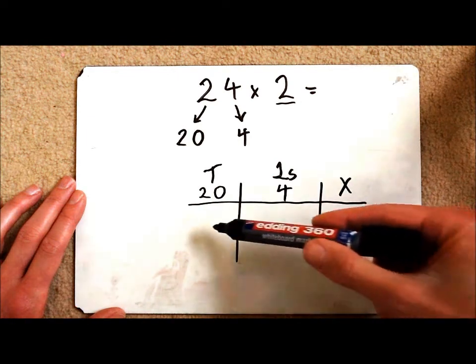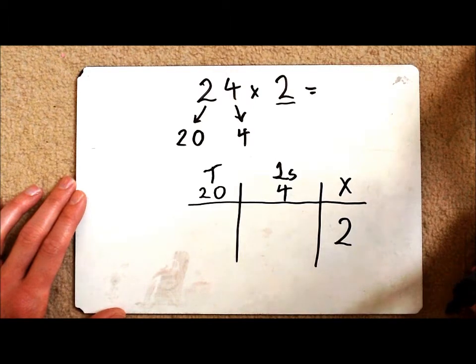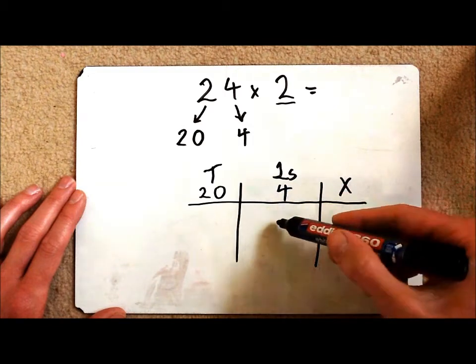And then you can see I've got 2 spaces here where my answer to my multiplication is going to go. So let's do my ones first of all. 2 multiplied by 4 is 8.